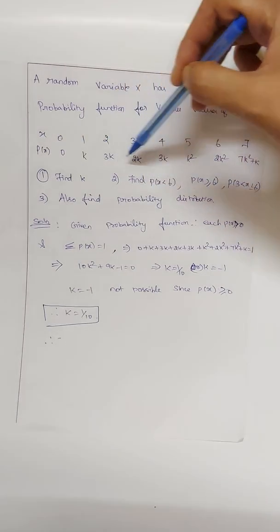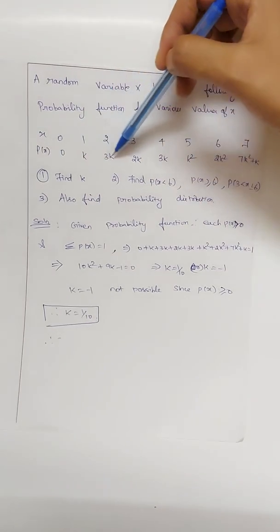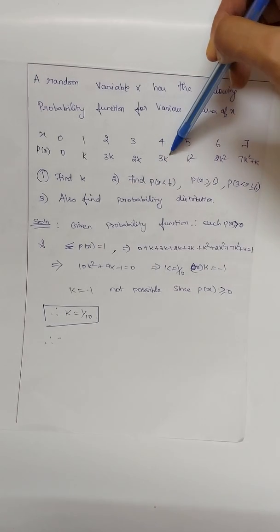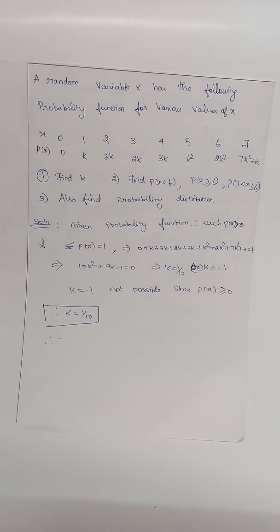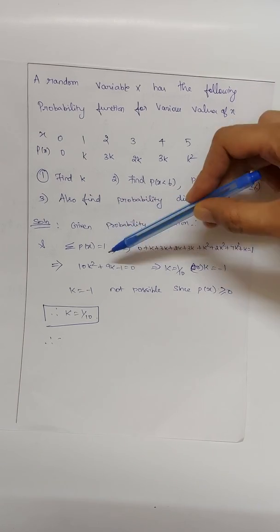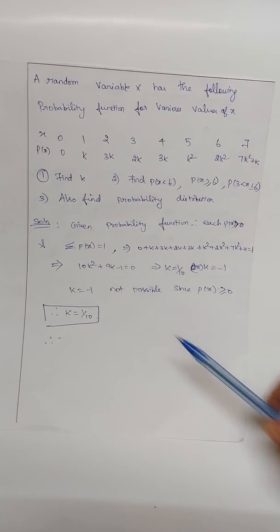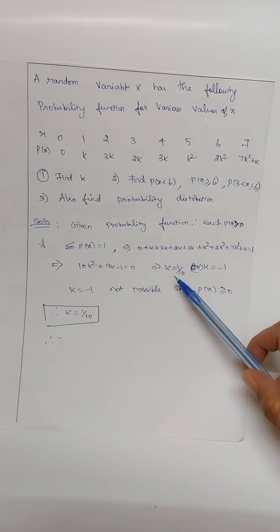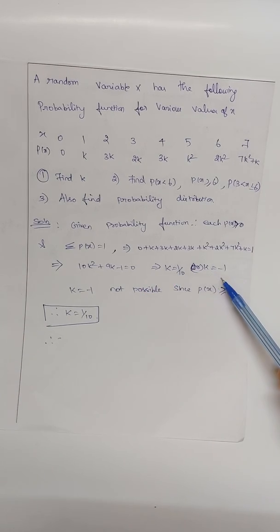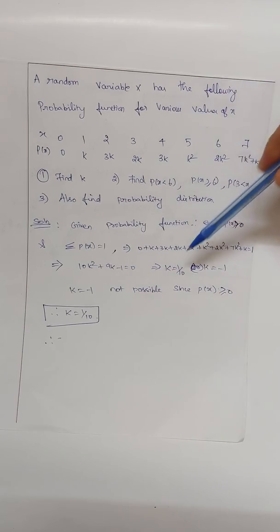Since all probabilities must sum to one: 0 + k + 3k + 2k + 3k + k² + 2k² + 7k² + k = 1. Simplifying gives the quadratic: 10k² + 9k − 1 = 0. Solving this gives two roots: k = 1/10 or k = −1.